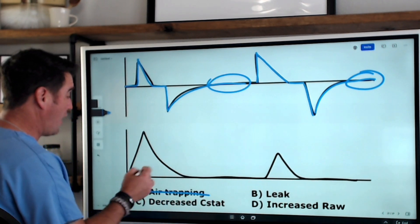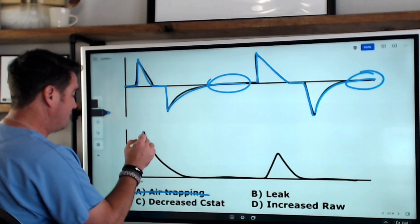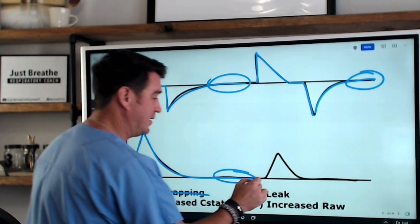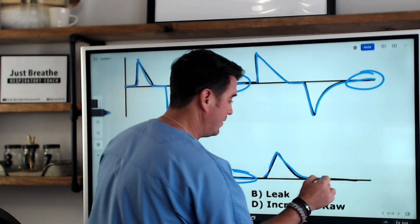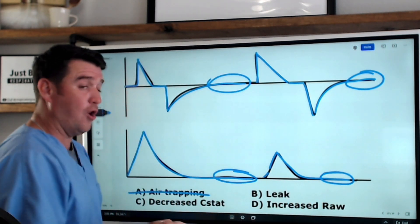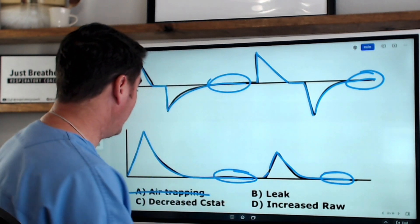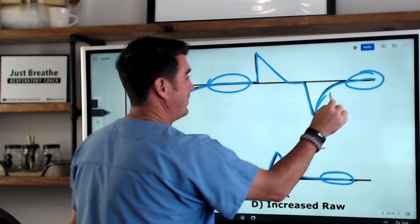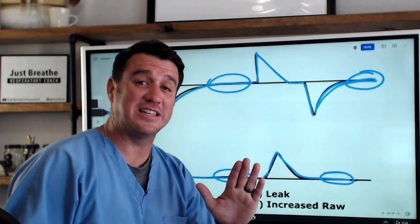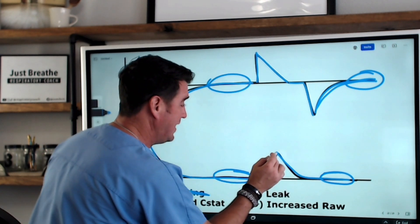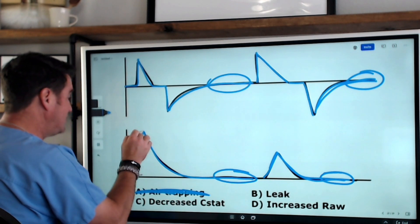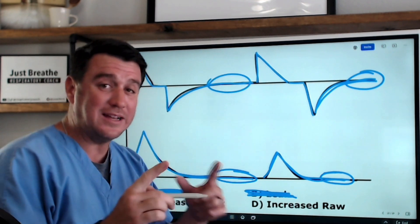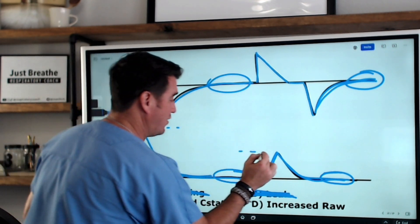So now we notice that our volume waveform comes up. And guess what? Back to baseline. Up, back to baseline. So this is interesting. We don't have air trapping because our flow returns to baseline. We also don't have a leak because everything we're putting in, we're getting back. Everything that goes in, comes back. So it's not a leak. So why do we have varying tidal volumes?